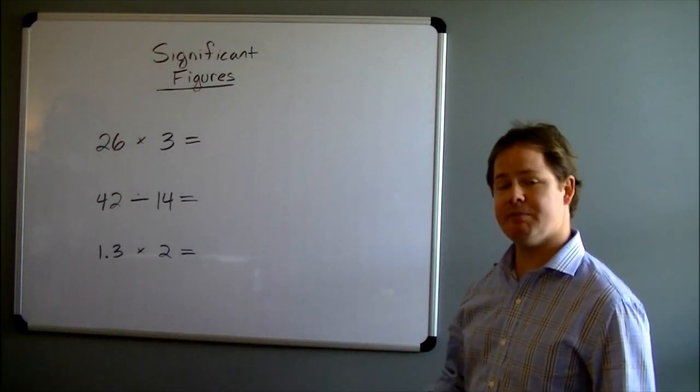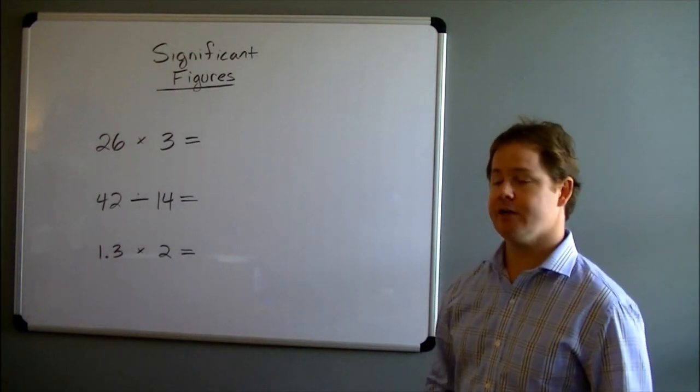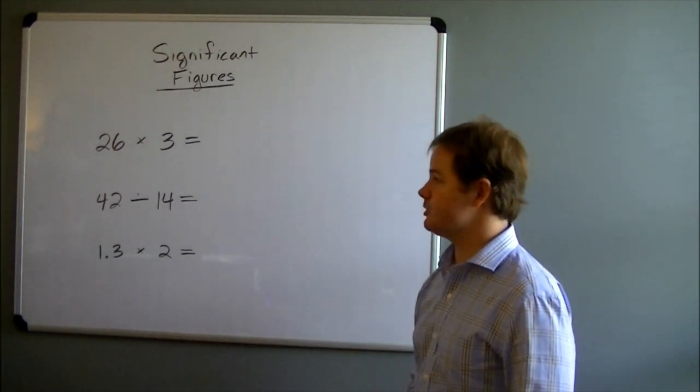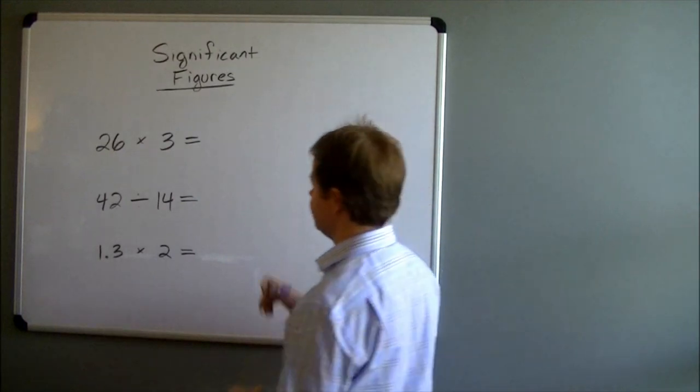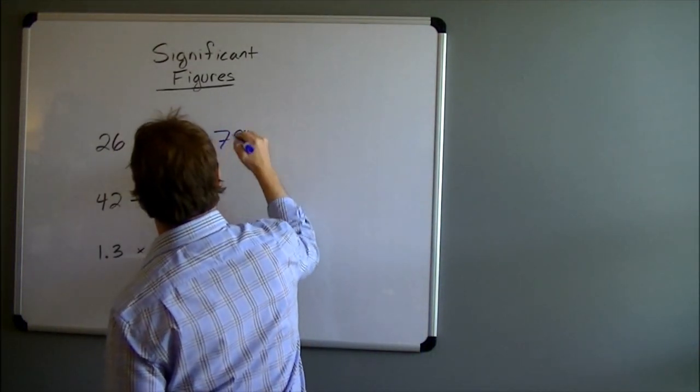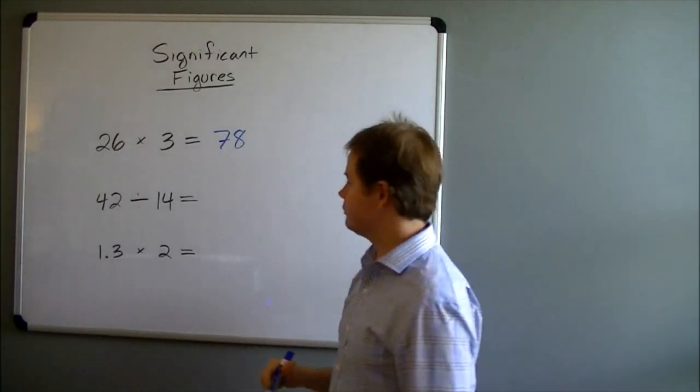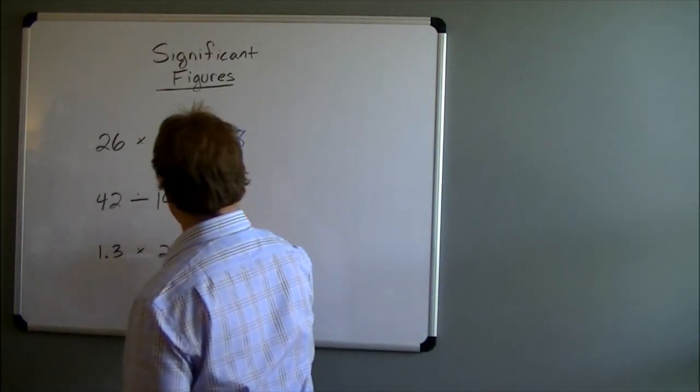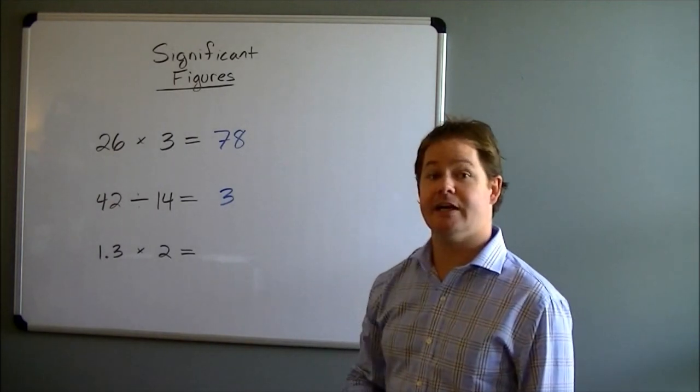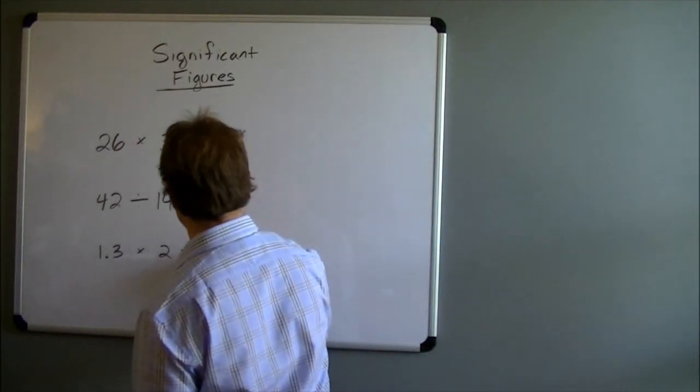So, in this case, if you type into a calculator, do it in your head or write on a piece of paper, 26 times 3, the result will come out to be 78. If you do 42 divided by 14, your result will come out to be 3. And if you do 1.3 times 2, your result should come out to be 2.6.